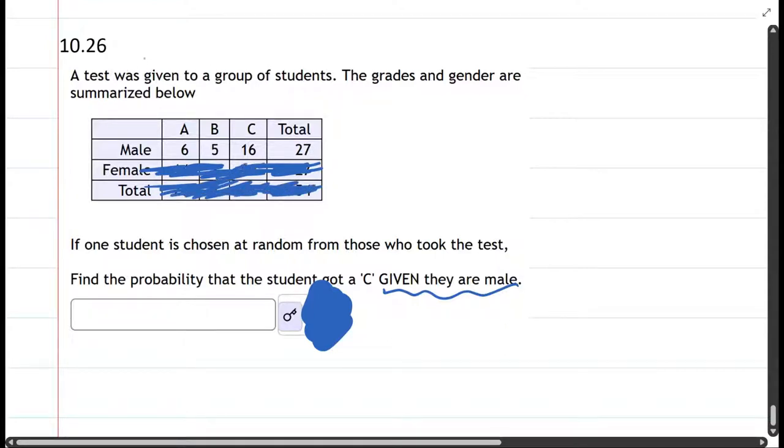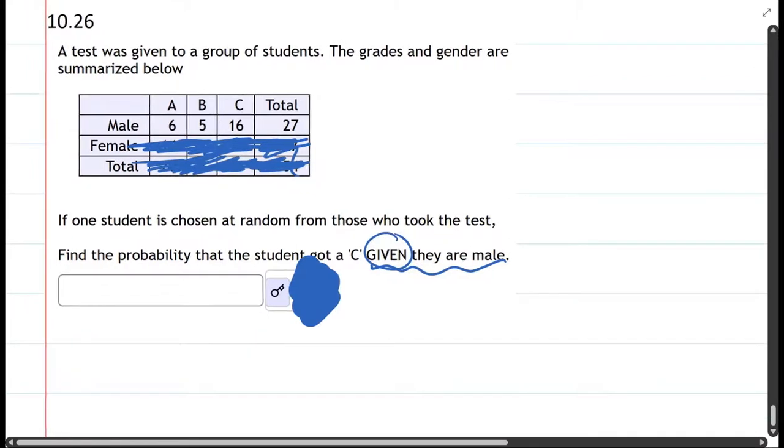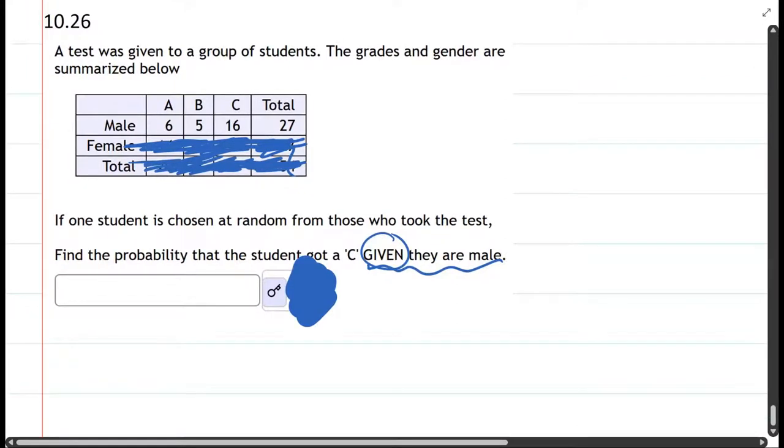Now that we've narrowed it down to only what we're considering - that's what this 'given' means, it's only what we're considering. Now I want to find the probability that the student is a C student.